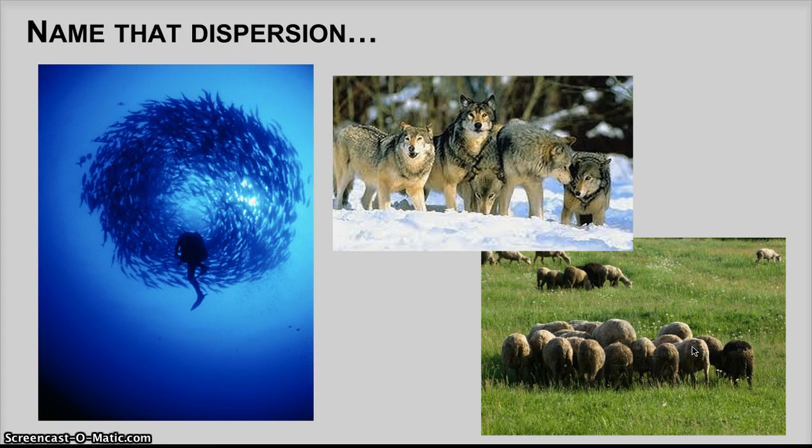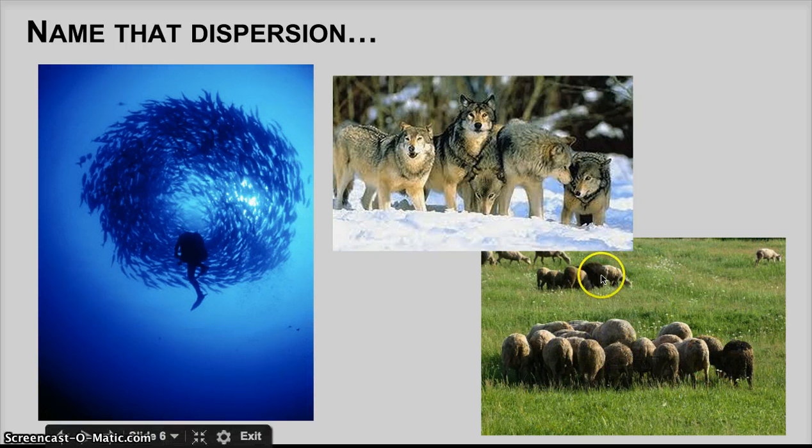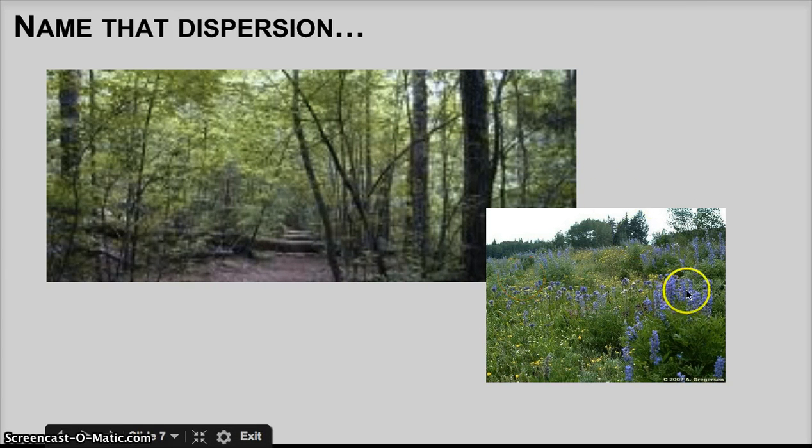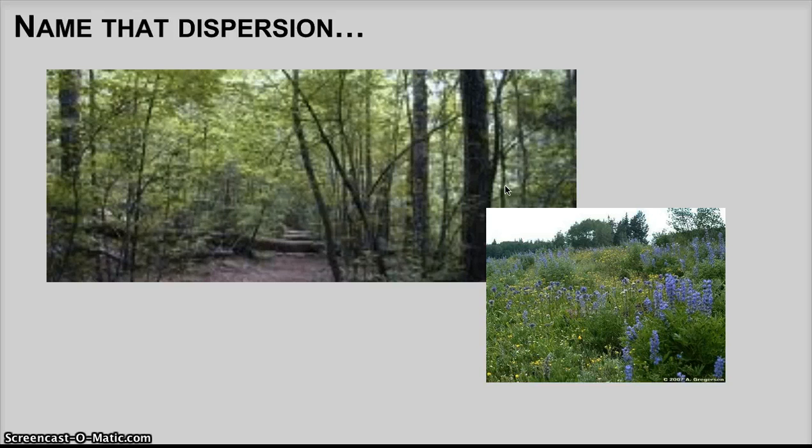So in this first example, I want you to figure out which of the three patterns of dispersion these populations are showing. You have a population of wolves, a population of grazers. I think there's both buffalo and sheep in this example. And then a population of fish. So record where you think that example goes. Here we have a general grassland where you've got lots of different species in different areas. Record in your notes where you think this group of trees and flowers and grasses goes.